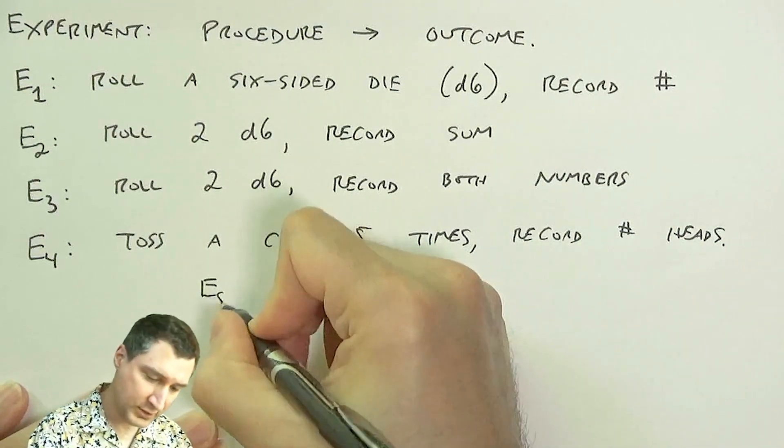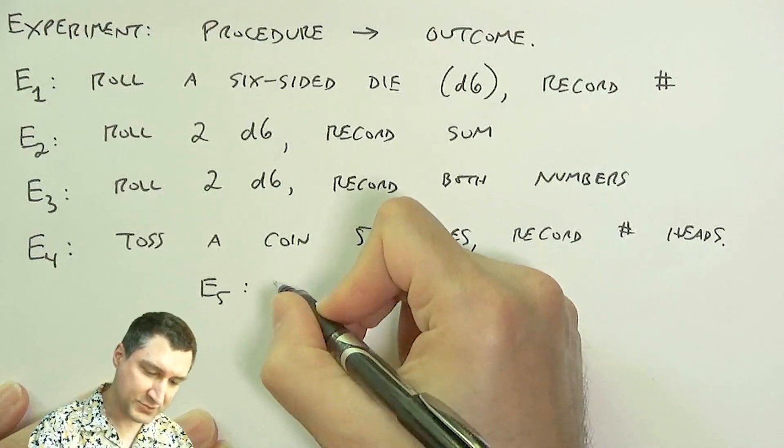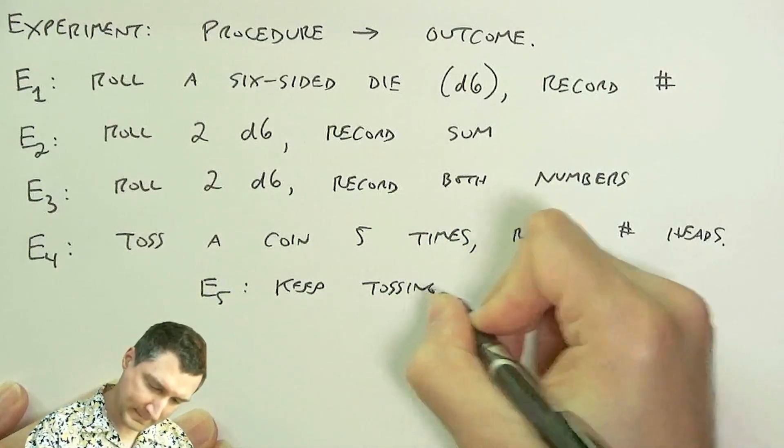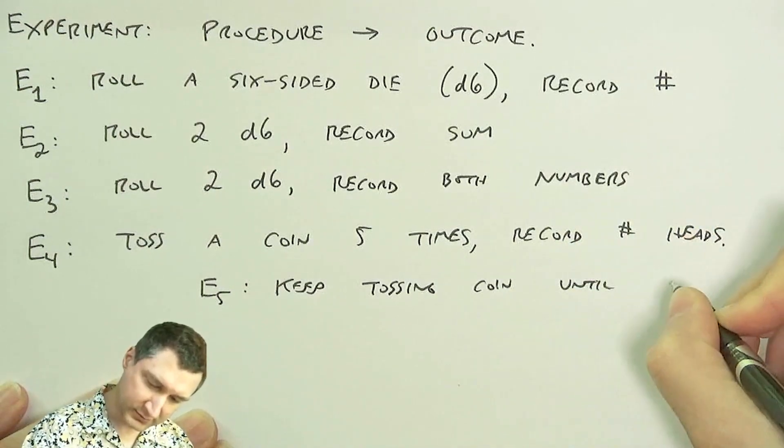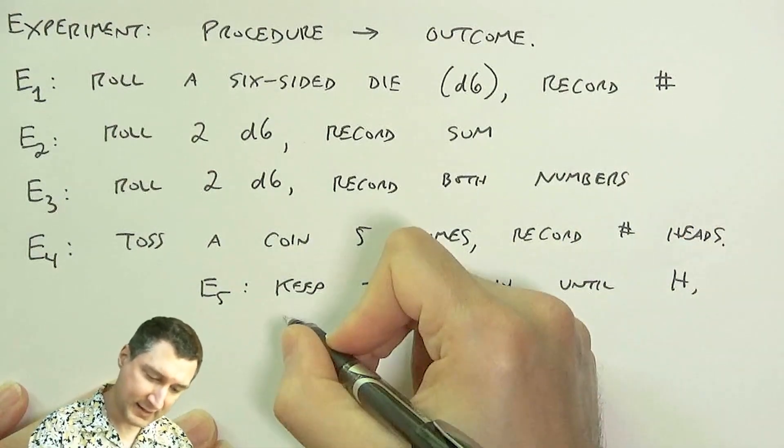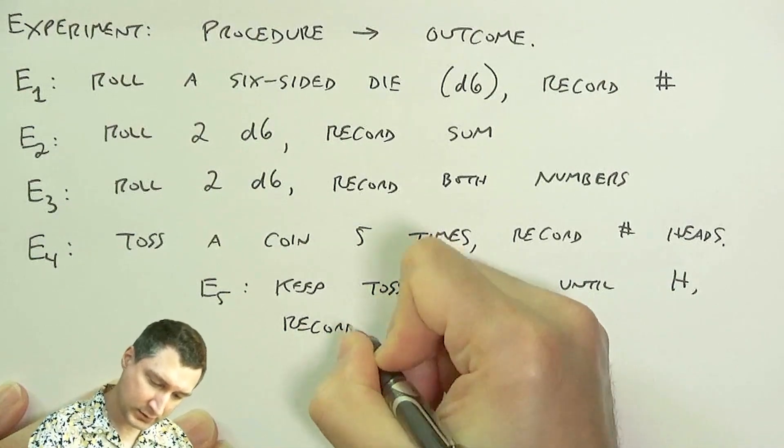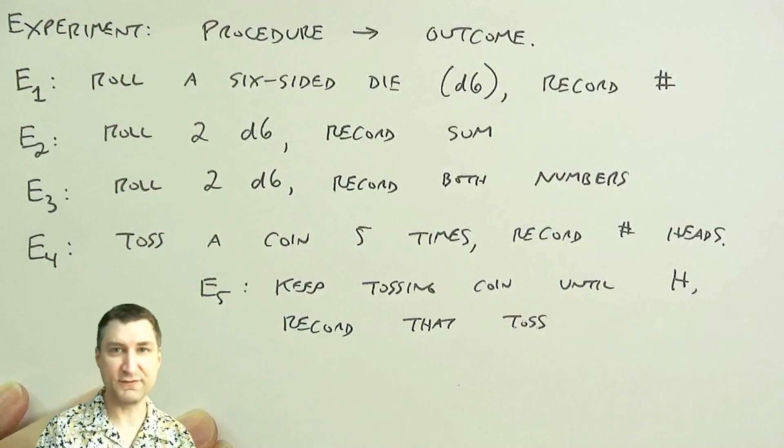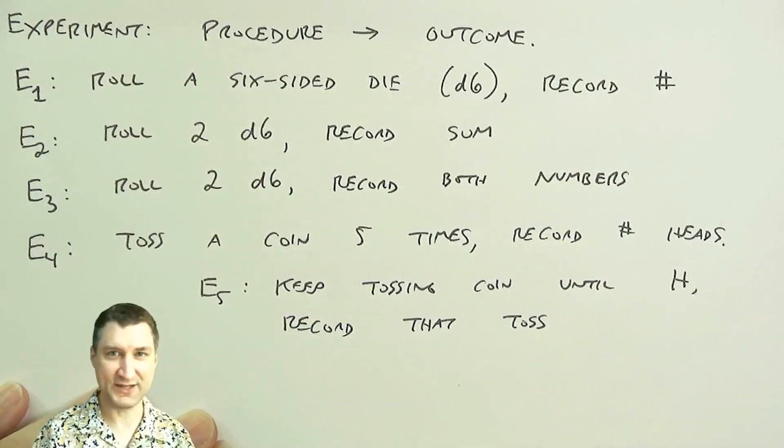Or I could keep tossing my coin until I get a head, and I could record which toss that was. So it could be the first toss, the second toss, or the tenth toss, right?